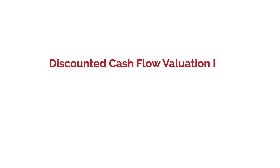Hi everyone, welcome back to the HVAC Comp. In the last video we started off with some of the key building blocks of the DCF valuation, or the discounted cash flow valuation. We talked about WACC — the weighted average cost of capital — and discounting, using WACC as the discount rate. To form your WACC you use the cost of equity and cost of debt and take a weighted average. To find the cost of debt you look at yield to maturities, or do a ratio of interest expense over total debt. For cost of equity we use CAPM, the capital asset pricing model. Refer to the last video for information about WACC and discounting.